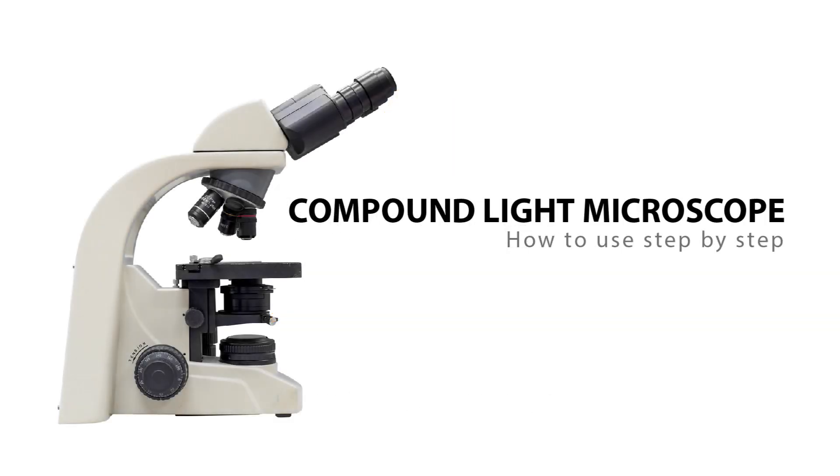Let's start first with the compound light microscope. A compound light microscope has at least two systems: an illuminating system and an imaging system.